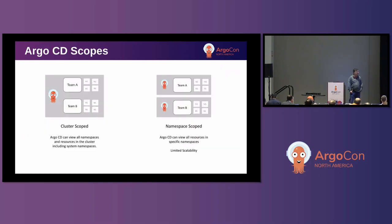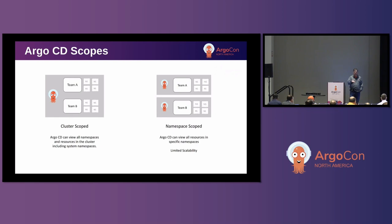Argo CD scopes are an underappreciated feature. There are two scopes: cluster scope and namespace scope. When you deploy Argo CD with cluster scope, Argo can see everything in that cluster — it has complete cluster-wide permissions. With namespace scope, it can only see namespaces you've given it permission to. The downside of cluster scope is a lot of privileges. The downside of namespace scope is scalability: it sets up watches per namespace and doesn't scale effectively beyond tens of namespaces — hundreds will cause significant problems.